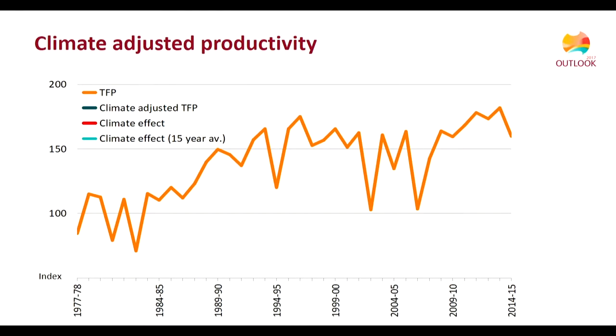Once we do that, we have a model we can use to predict what productivity of these farms would be under alternative climate conditions. We actually do that for a 100-year sequence, taking climate data from 1915 up until 2015, simulating for each of those years what productivity might have looked like for the individual farms, then averaging across all farms and across all 100 years. The result is what we call our climate-adjusted productivity on cropping farms — which basically tells you what would happen to productivity if climate was always at its long-run average.